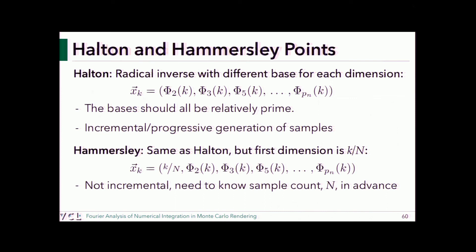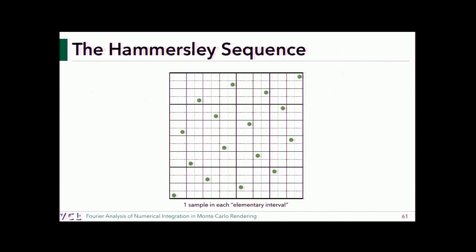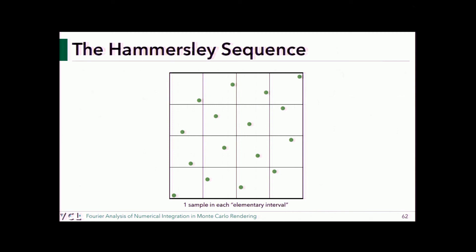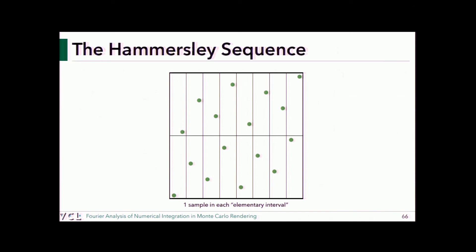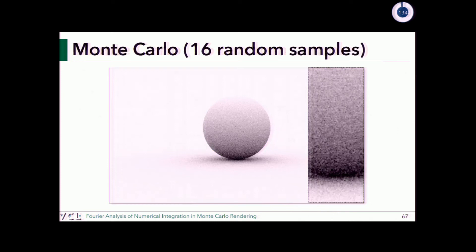Hammersley found a slightly different construction around the same time: keep the first dimension as a regular grid (since in 1D the van der Corput sequence is regular anyway, no need to compute the radical inverse), and apply the radical inverse in every other dimension. They're similar in idea but generate very different patterns with different properties. An interesting property of Hammersley: it is provably stratified in many different ways, with one sample in every stratum — giving it a lot of power.